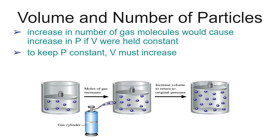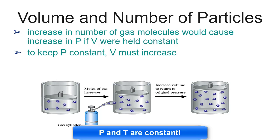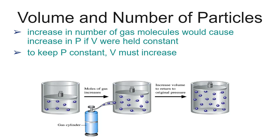Finally, if we want to look at the number of particles compared to volume, we have to let the volume vary. If I allow the volume to change, I'm going to keep my pressure constant. And I'm just not going to change the temperature either, so I'm keeping P and T constant and looking at just V and N. If I add more particles, there are more particles to collide — that would normally cause the pressure to increase. But I allow the volume to change, so the volume will increase to keep the pressure constant. If I increase the number of particles, I increase the volume. That's another direct relationship.